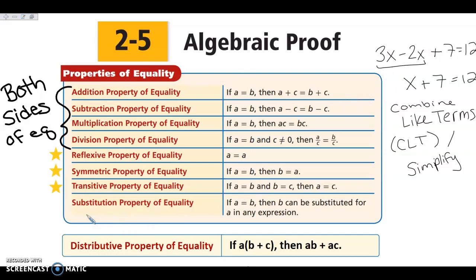The next one we're going to look at is substitution. If I said that x was 5, I could plug 5 in for x. Anytime you're plugging something in, you are using the substitution property. Our distributive property is used anytime we are multiplying things throughout parentheses.